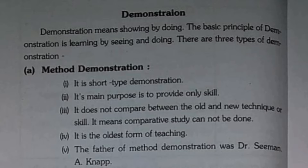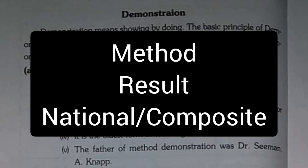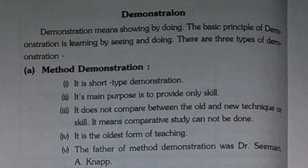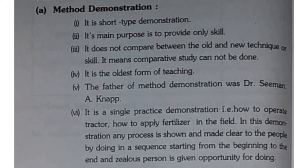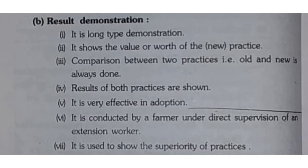There are three types of demonstration: method demonstration, result demonstration, and national or composite demonstration. The first one, method demonstration, is a short type — it provides only skills and does not compare between old and new technology, meaning comparative study is not possible. It is the oldest form of teaching. The father of method demonstration was Dr. Seaman A. Knapp. In this, we demonstrate each and every step in sequence from beginning to end.